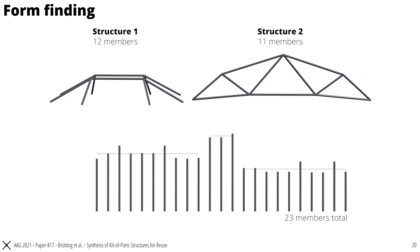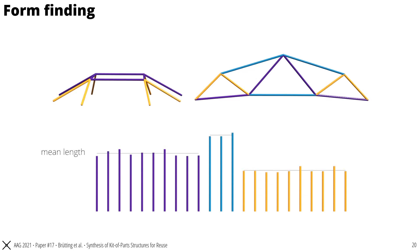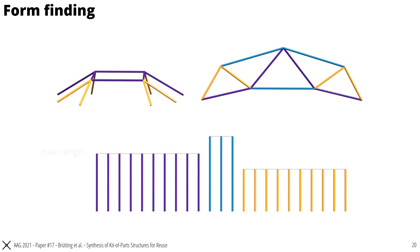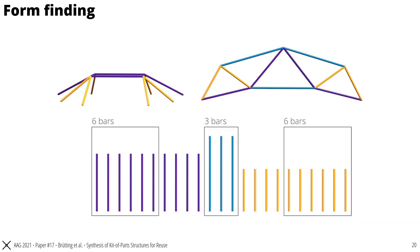This process is illustrated here. See at the top the two structures with 12 and 11 members and at the bottom a list of all members and their lengths. Now we want to cluster the members into three groups. Then the geometry is optimized to match the member lengths with the mean length of each group. This is repeated until convergence. At the end we have obtained two structures with three groups of identical member lengths. This means that bars of these lengths can be reused among the structures.